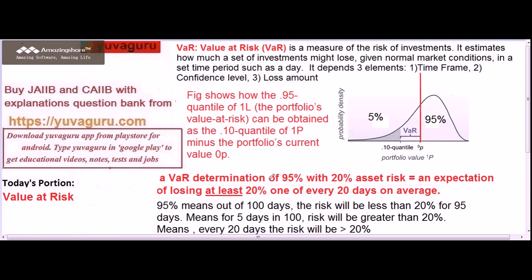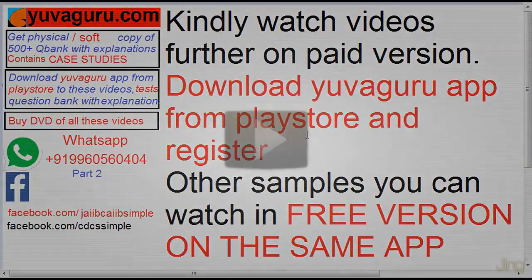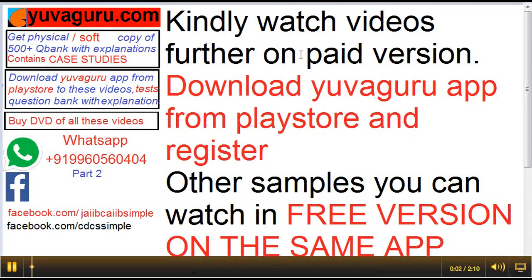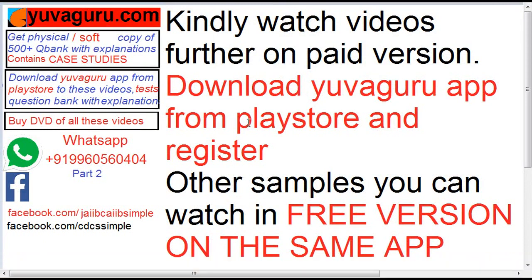Now let's see this with an example. We are determining 95% confidence level with 25% asset risk. For more detailed examples and to download study materials, you can visit the paid version of the app available on the Play Store. The paid version is very affordable compared to other study resources, and sample videos are also available on the free version of the same app.